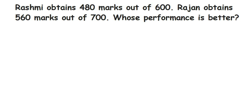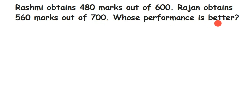Hi everyone, this is a question from Comparing Quantities of Class 7. The question is: Rashmi obtains 480 marks out of 600, Rajan obtained 560 marks out of 700 — whose performance is better? So we have to compare the percentage of Rashmi and Rajan.